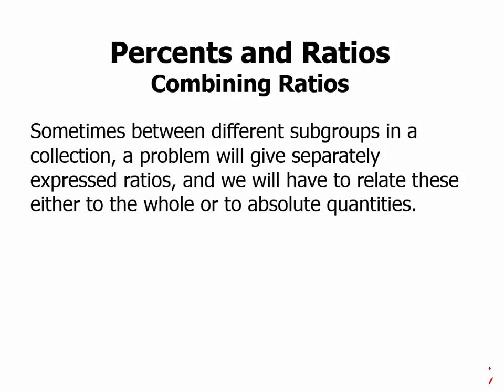So for example, there might be sets A, B, C, and D. And instead of giving us an overall ratio, it might tell us one ratio from A to B, another ratio from B to C, another ratio from C to D. And then we have to combine those ratios to understand what's going on with the whole group.